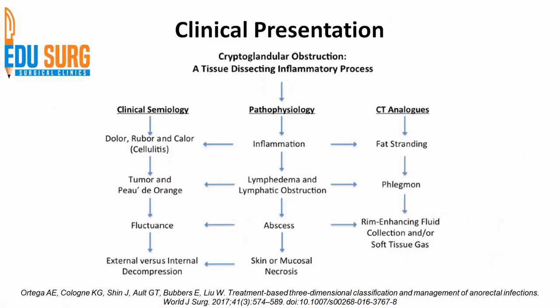This is a very nice depiction of how the various clinical features appear in a case of perianal abscess or fistula in ANO. This article was in World Journal of Surgery 2017 — a very nice article showing the various perianal spaces. I would recommend you to read this article as far as the clinical presentation is concerned and the CT or imaging analog. MRI is more commonly used, but it shows how inflammation, lymphedema, lymphatic obstruction, abscess, and finally skin or mucosal necrosis can be seen clinically as cellulitis.